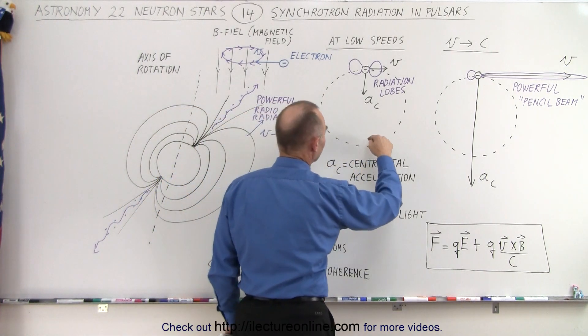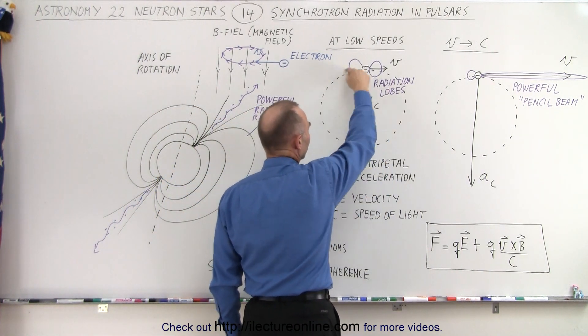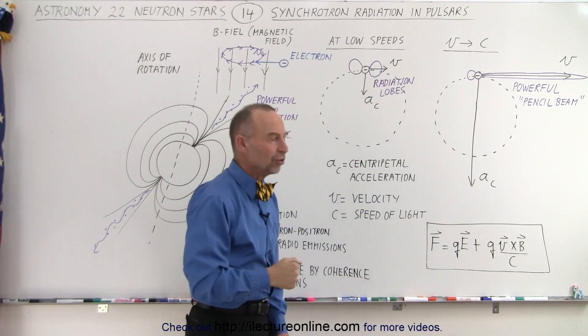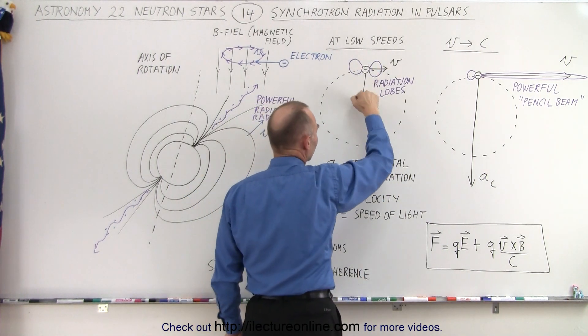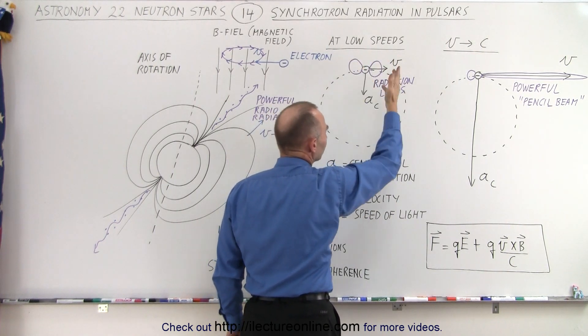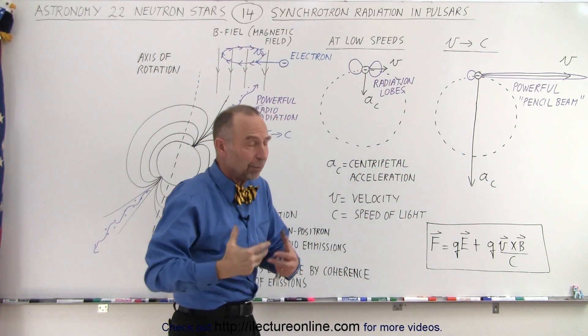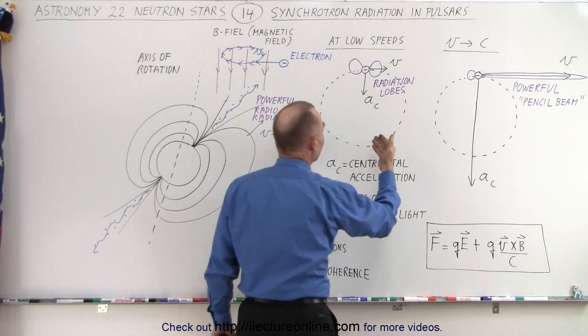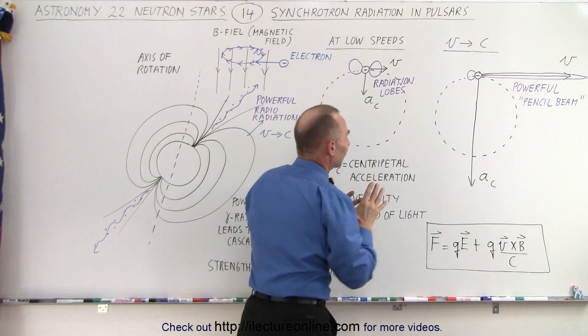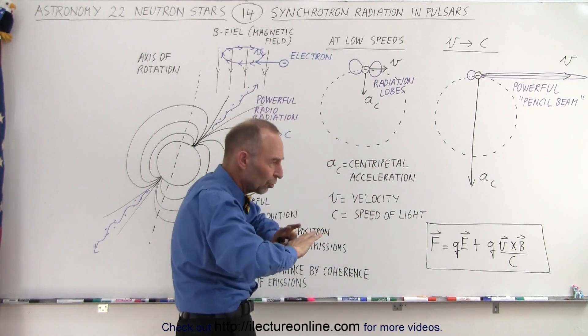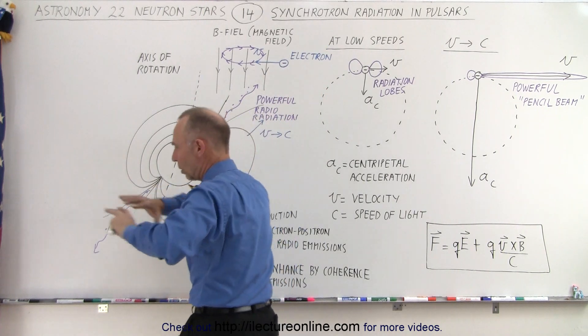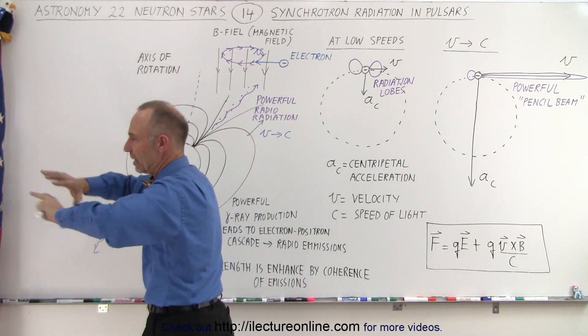When you have something that looks like this, where an electron goes around in circles, we have centripetal acceleration. That's acceleration towards the center of the rotational motion, which causes radiation. We have radiation going in both directions, and the direction is not very precise. Radiation is being sent in all directions at all angles in the other direction.